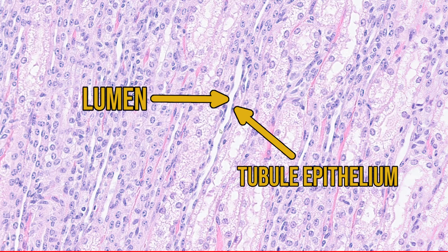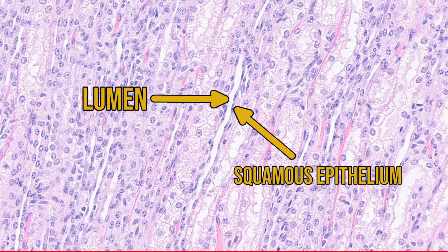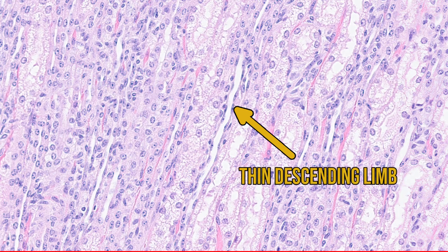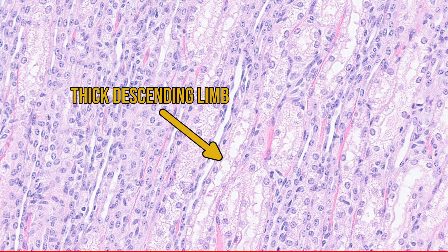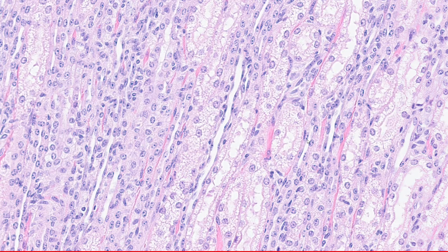Taking this one as an example, we've got the lumen, and next to it there's a squamous, squashed epithelium — this is the typical appearance of either the thin descending or the thin ascending limb. Then just next to that, we have another tubule that looks very similar to the thick descending limb we saw earlier. In fact, most of this image is made up of thick descending limbs with thin limbs between them.